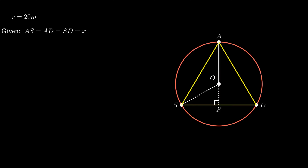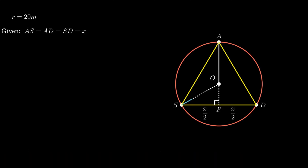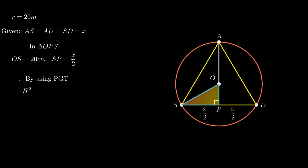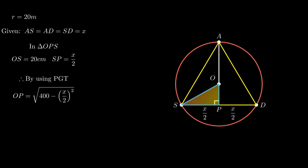To find one side of triangle ASD, a right-angled triangle is constructed by drawing a perpendicular from point A to segment SD. Joining point S to point O results in the formation of right-angled triangle OPS. By the theorem that any line perpendicular to the chord from the center bisects the chord, segments SP and PD each become half of X. In triangle OPS, by Pythagoras theorem, OS squared equals OP squared plus SP squared. Substituting values, R squared equals OP squared plus (X/2) squared. Transposing for segment OP, we get OP squared equals 400 minus (X/2) squared, which simplifies to OP equals the square root of (400 minus (X/2) squared).